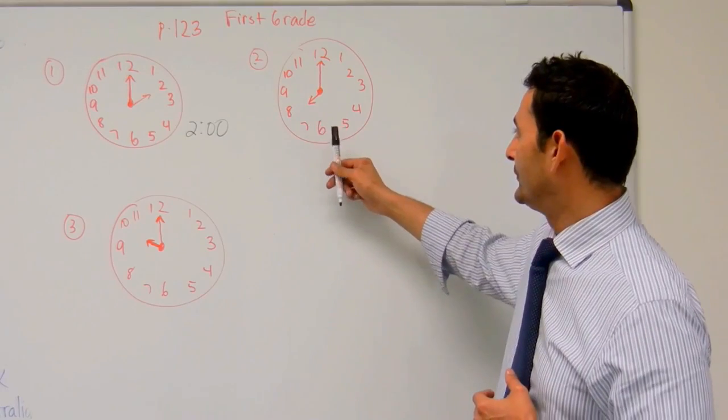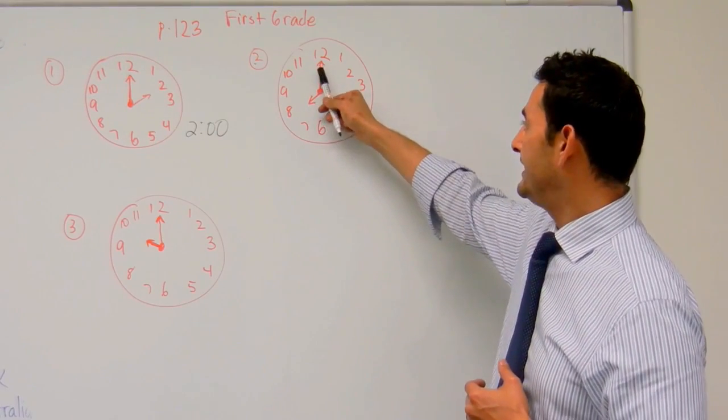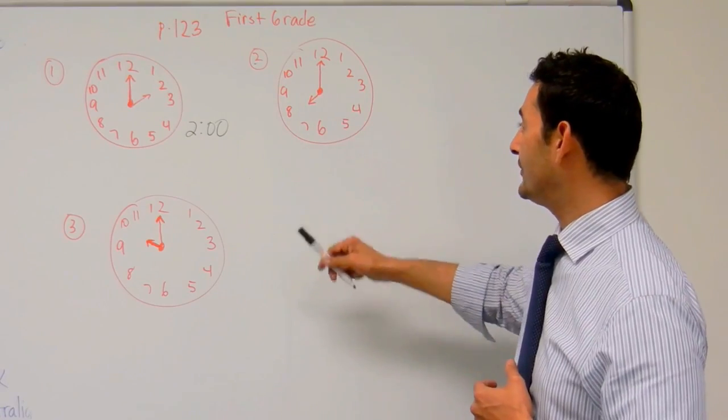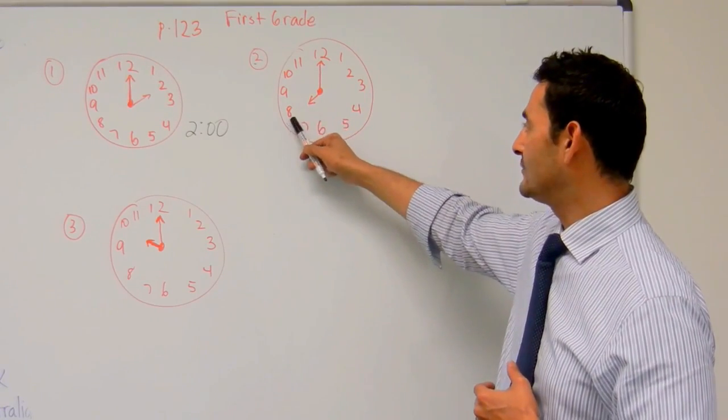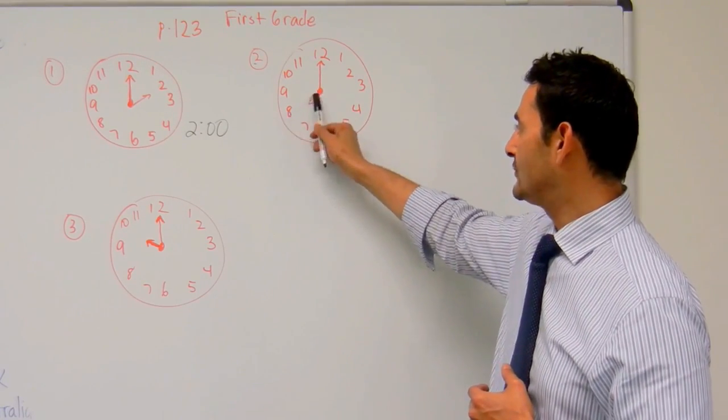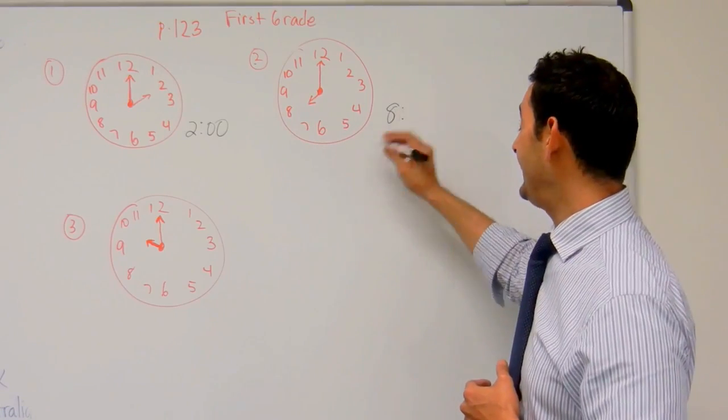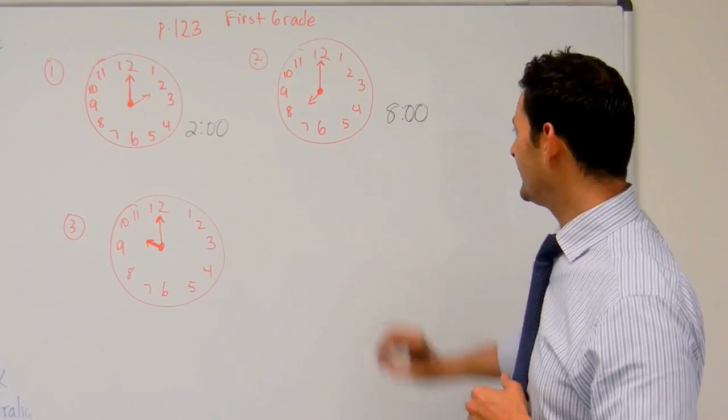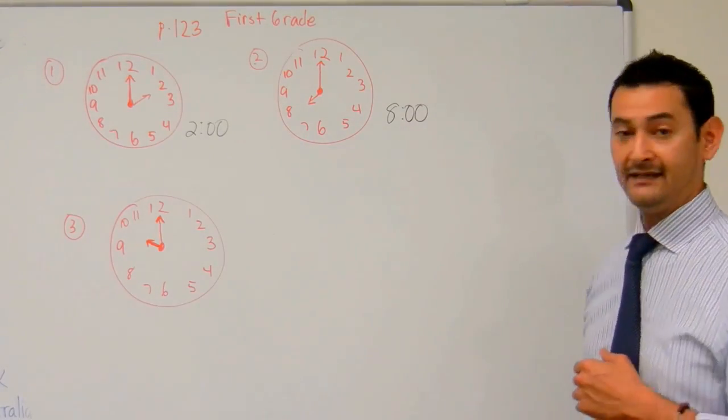Let's take a look at number 2. Here we have the small hand, here we have the large hand pointing at the 12. And remember, the 12 is going to be 0, and the small hand tells us what the hour is. So this is pointing straight at the 8, so that's going to be 8, and that 12, remember, is 0. So we're going to add a 0, 0 there, and that's going to be 8 o'clock.